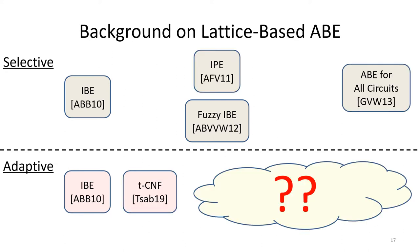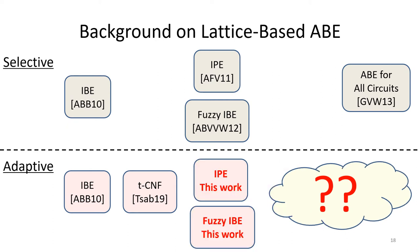The situation on lattice-based ABE is very different. Even though we have selectively secure lattice ABE even for circuits, the most expressive predicate for which we have adaptively secure ABE from lattices is T-CNF formula for constant T. To fill this gap, in our work, we propose the first adaptively secure ABE for inner product and fuzzy ABE from lattices.